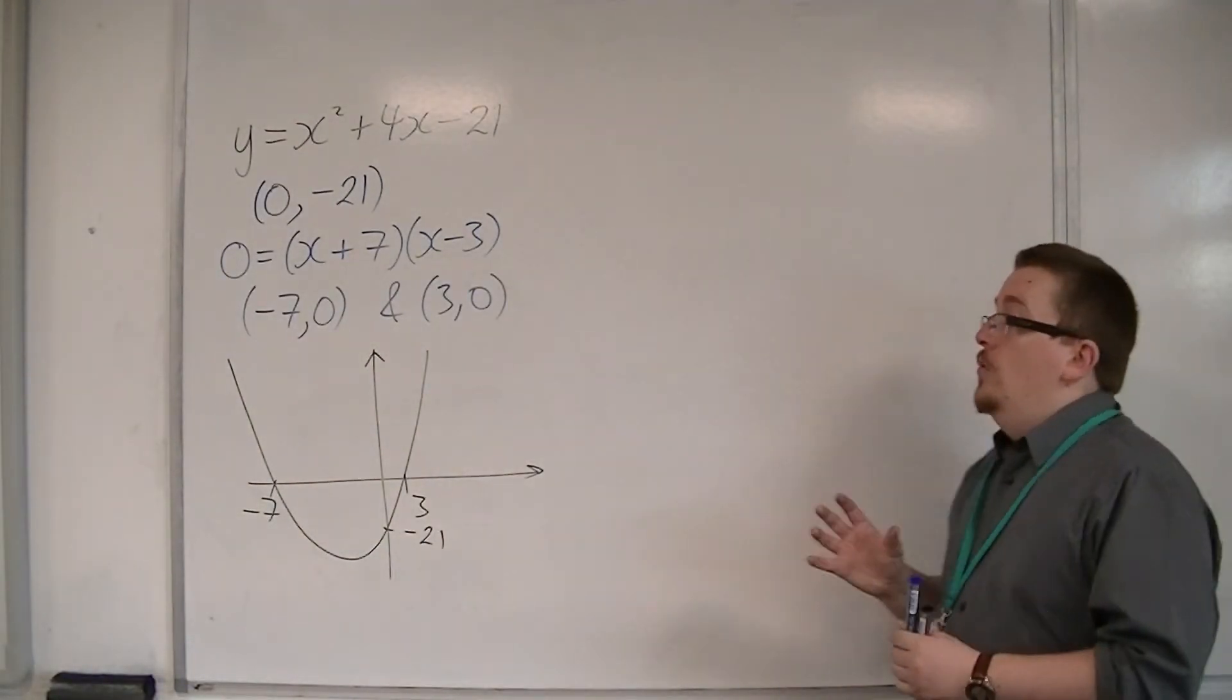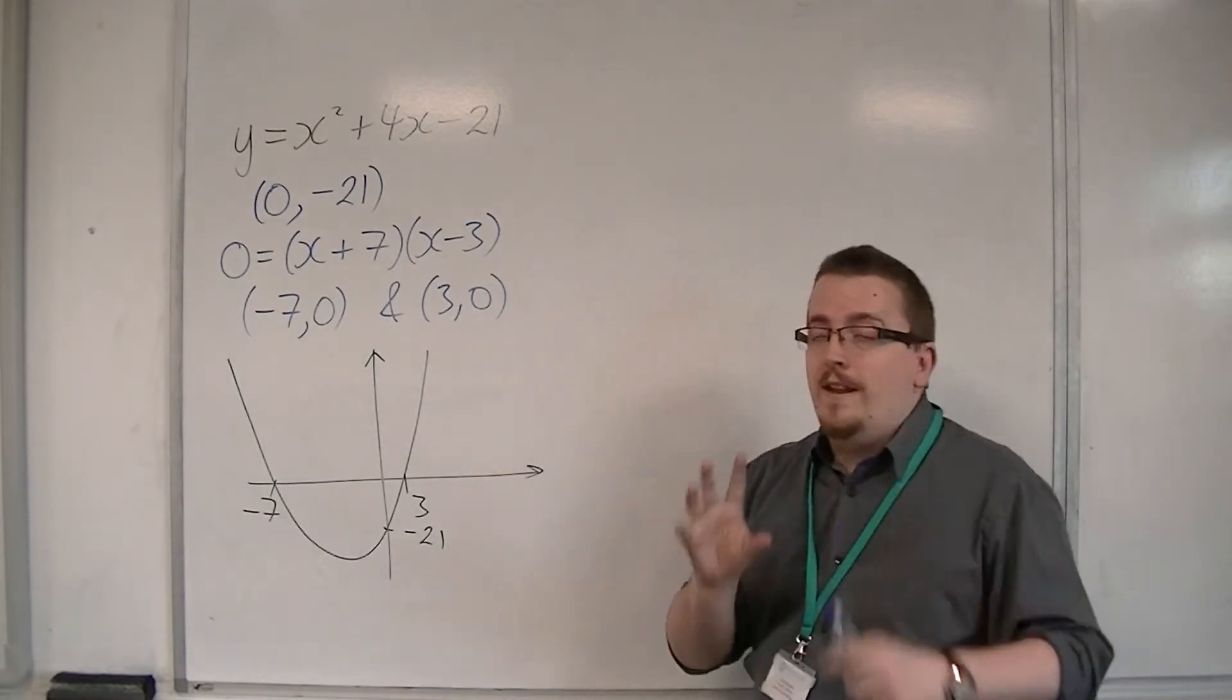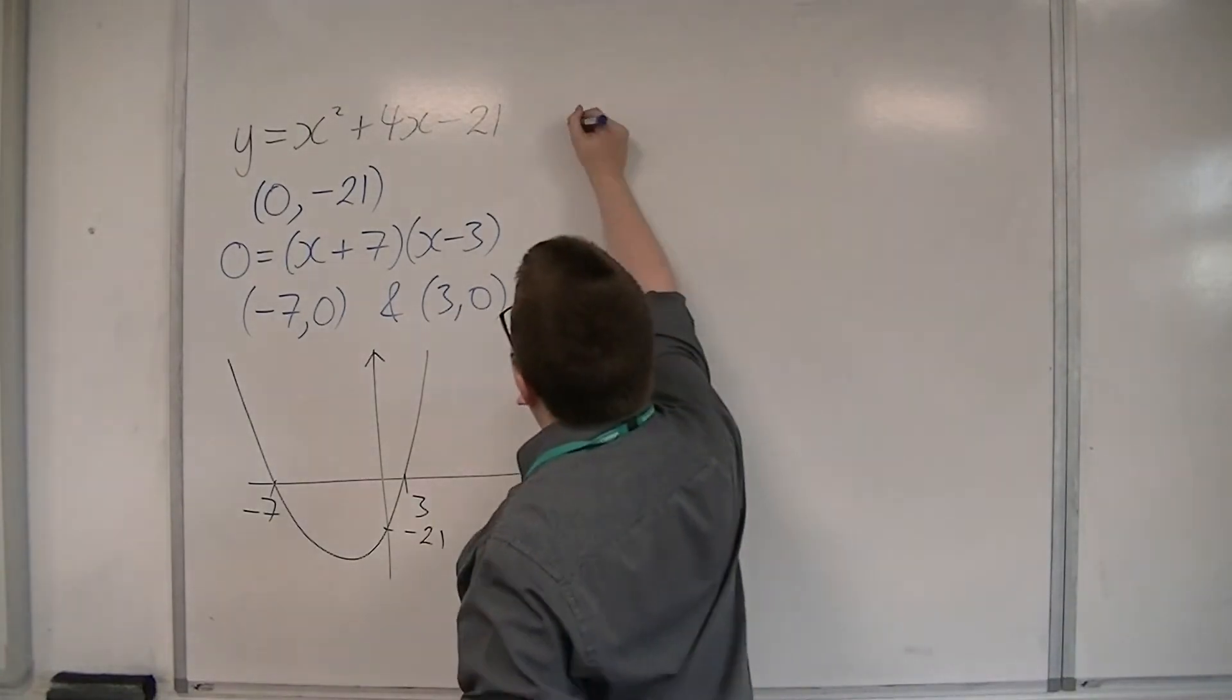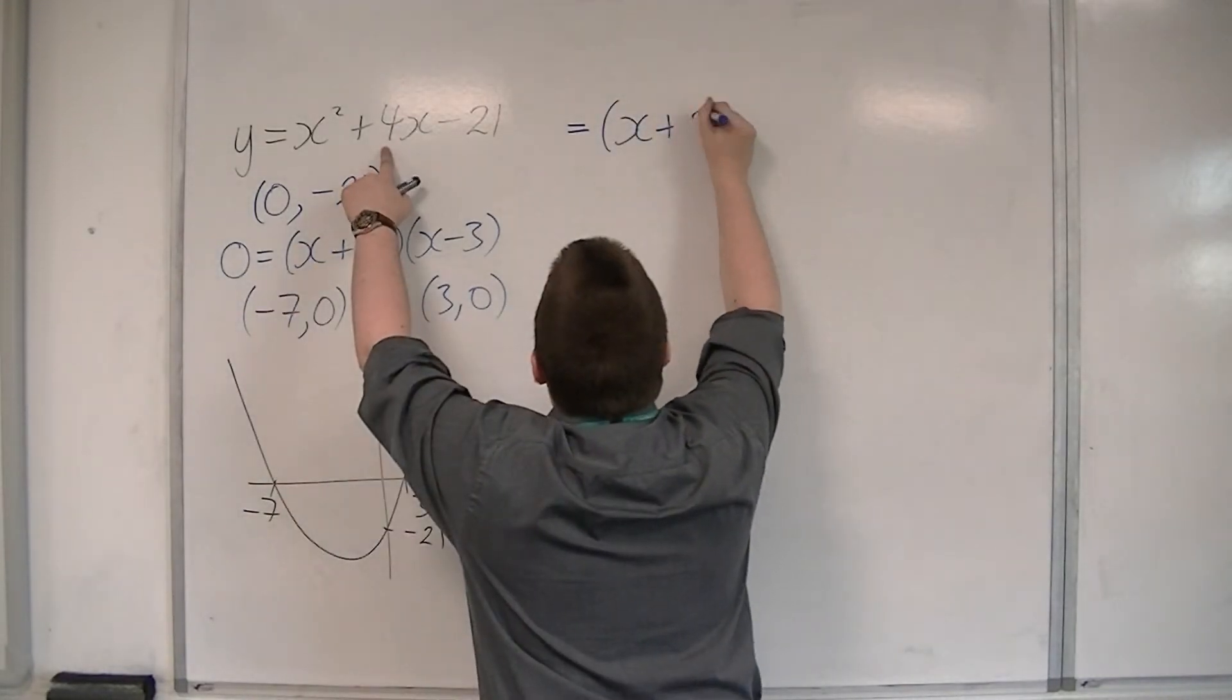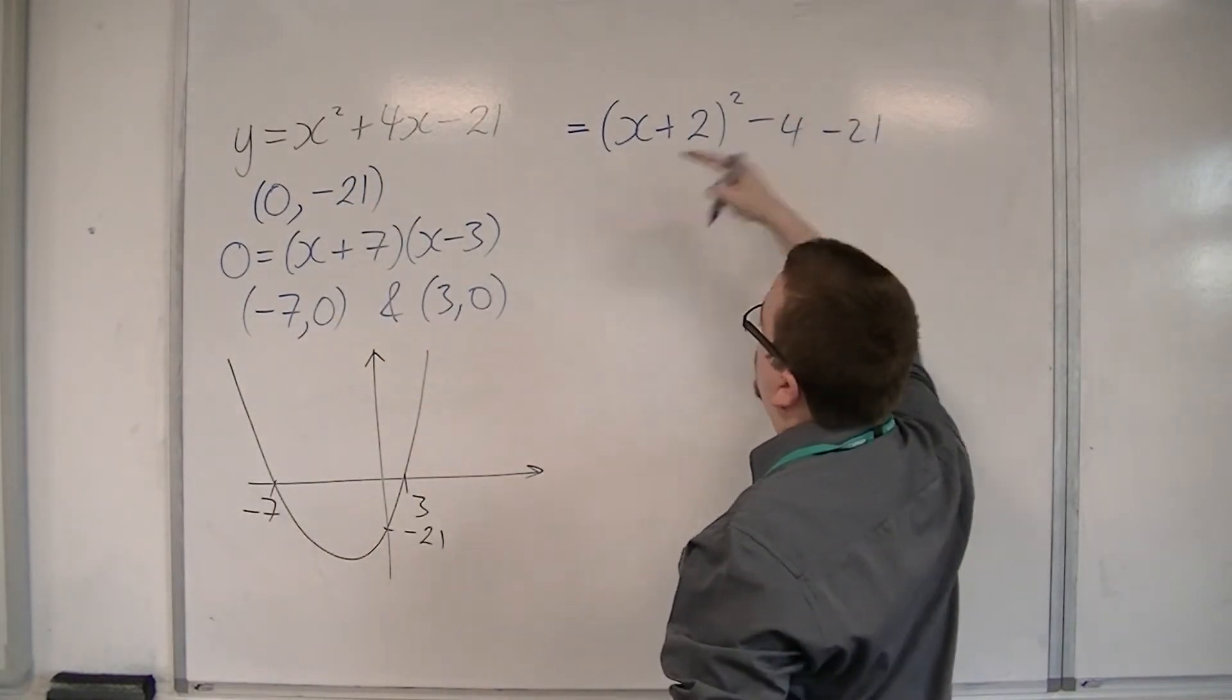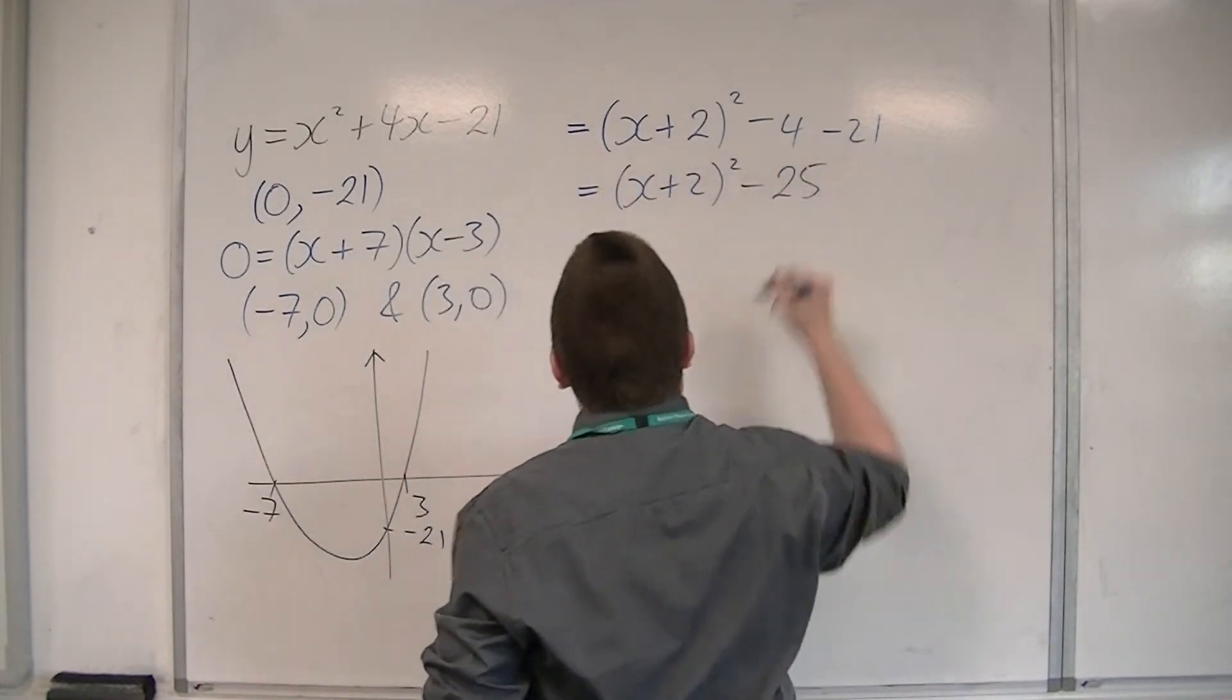So we know now how to figure out where it crosses the x-axis and we know how to factorise. But we've also learnt how to complete the square. So if I complete the square on this, I get x plus half the 4 is 2 squared, take away that number squared is 4, take away that 21 that's still on the outside. So this is x plus 2 squared take away 25.